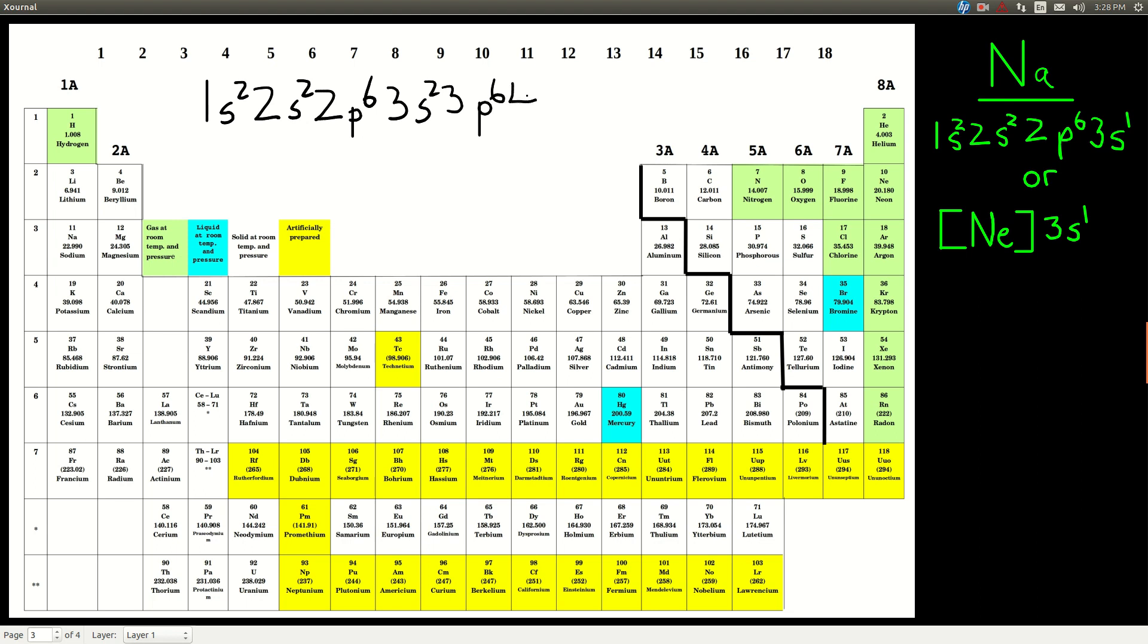so we'd say 4S2, and then we are in the 1, 2, 3rd column of the 3D block, so we'd say 3D3, or using core notation, the previous noble gas was argon, right here,